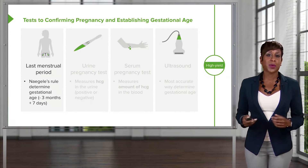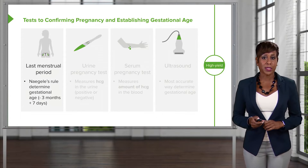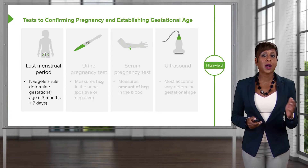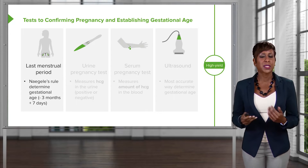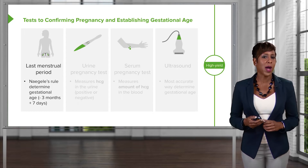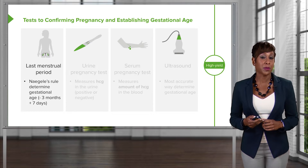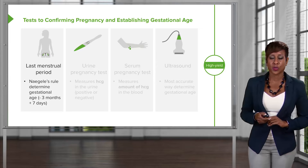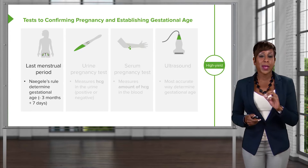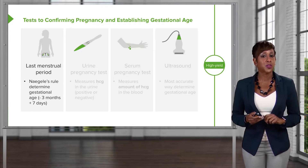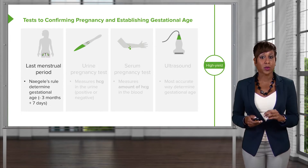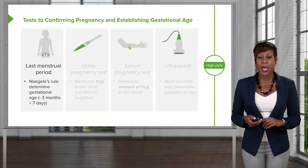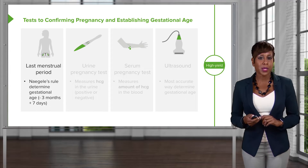There are several ways that we can confirm pregnancy and establish gestational age. We're going to talk about each of these and discuss the risks and benefits and why one test is better than the other. First, let's talk about last menstrual period. If we know a patient's last menstrual period and cycles are regular, we can determine the gestational age.